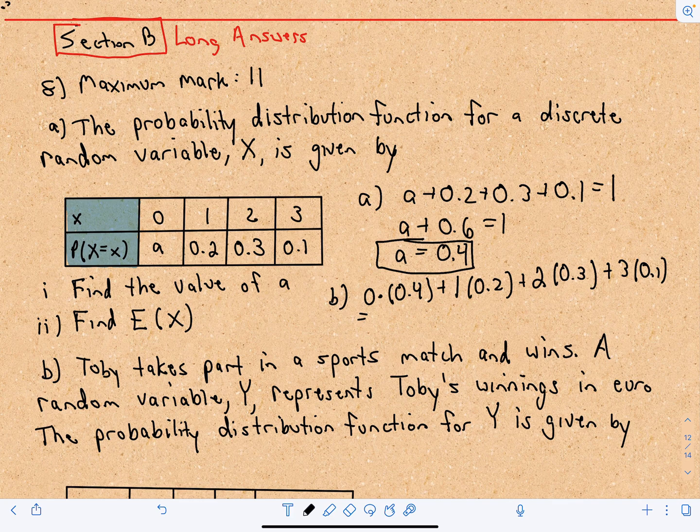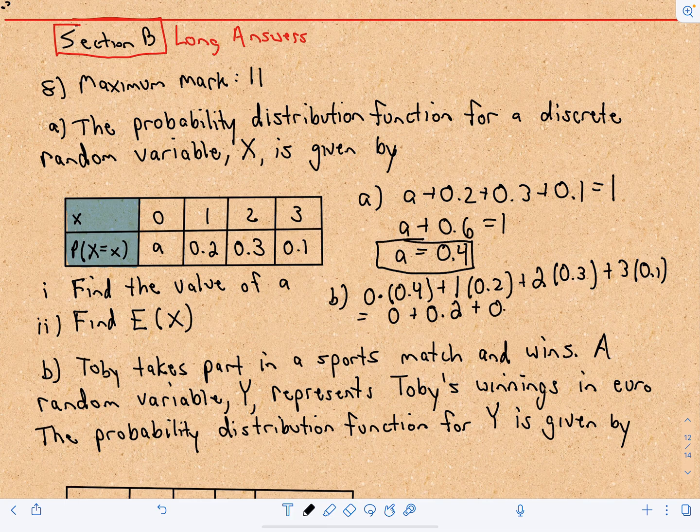0 times 0.4, that's just 0, plus 0.2. 2 times 0.3 is 0.6, and 3 times 0.1 is going to be 0.3.